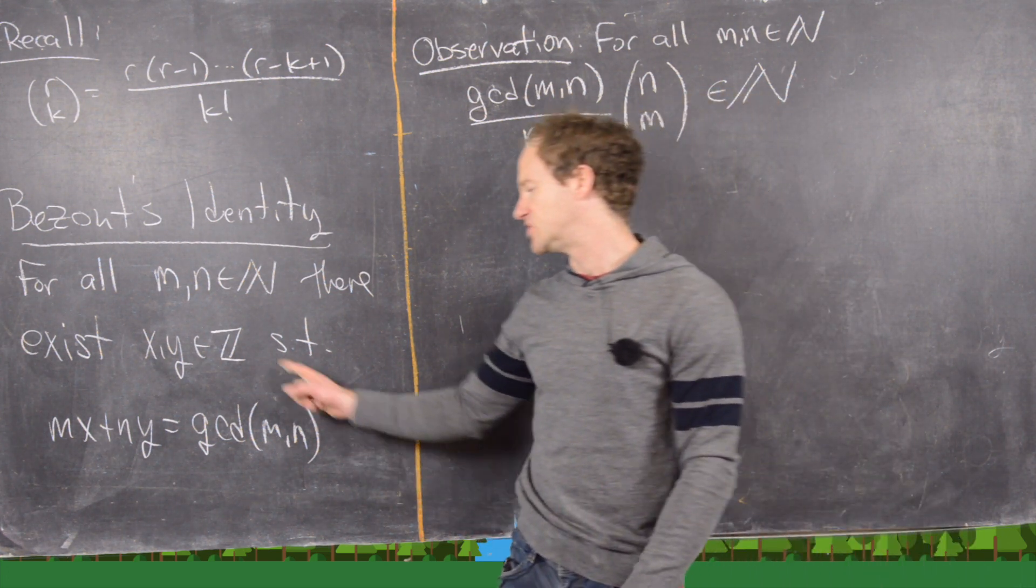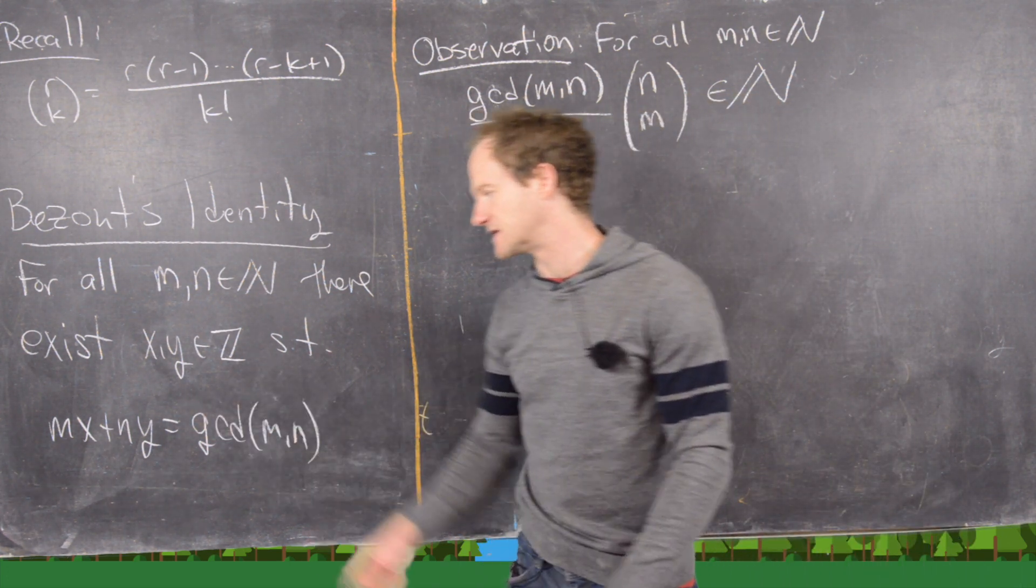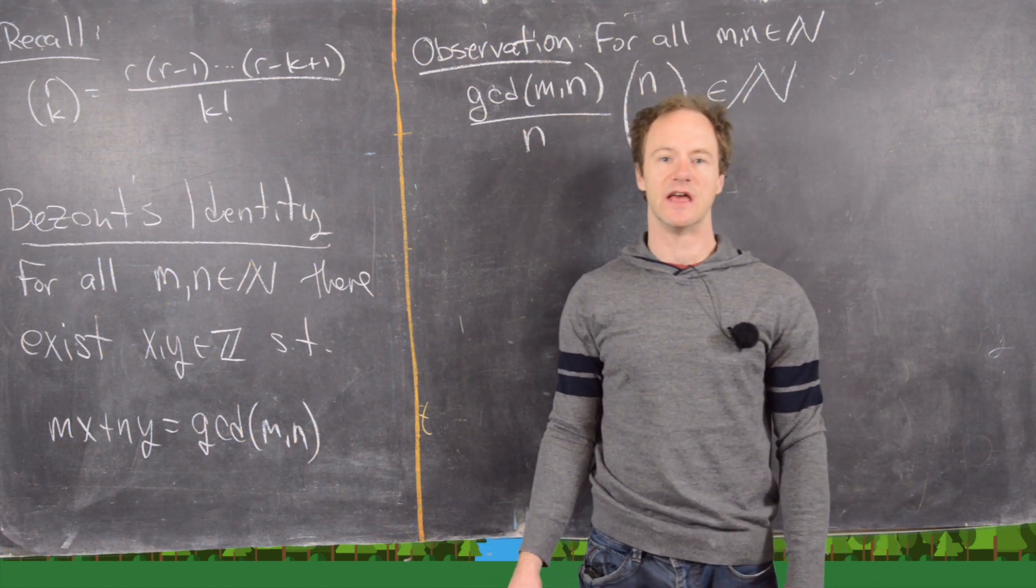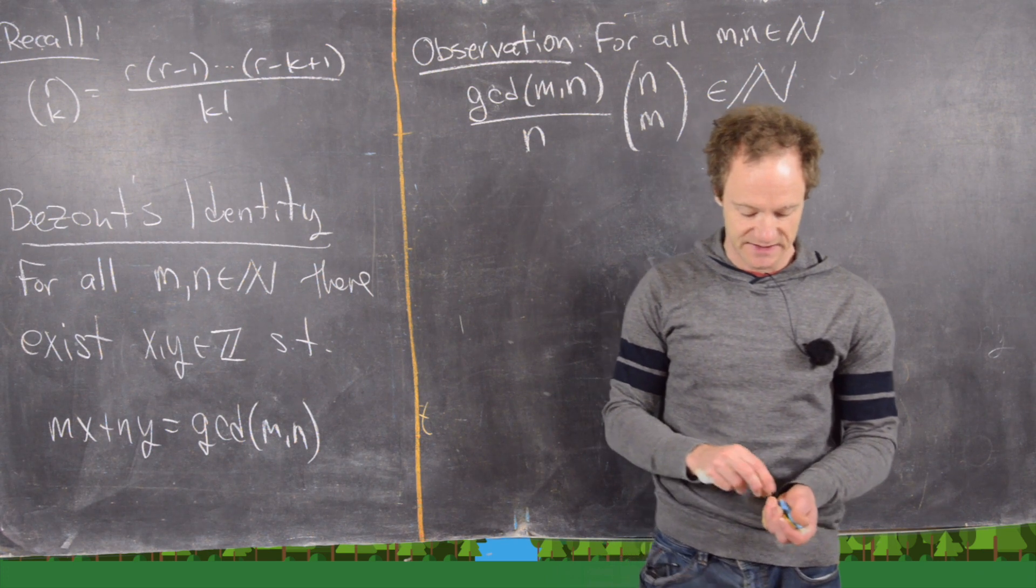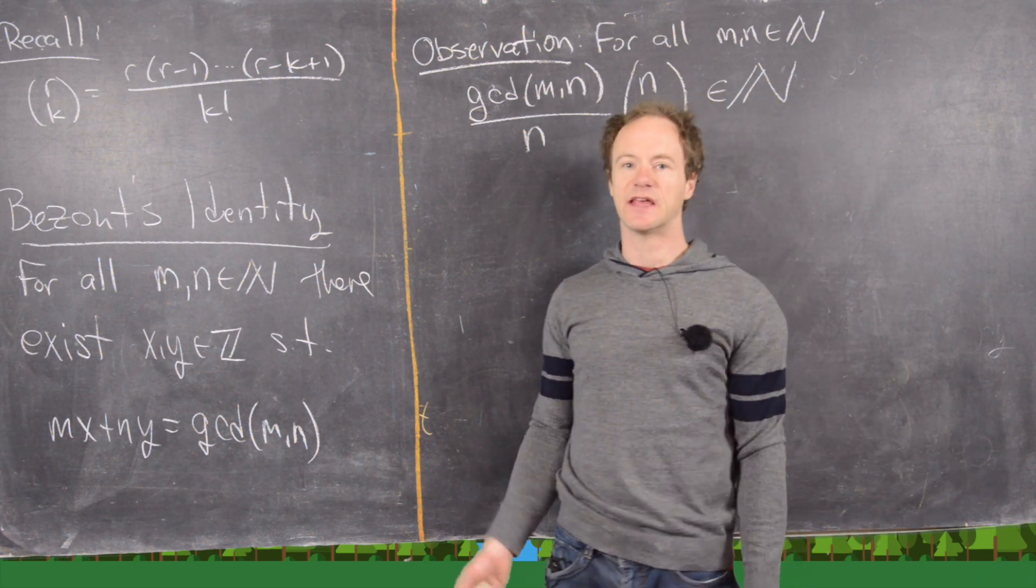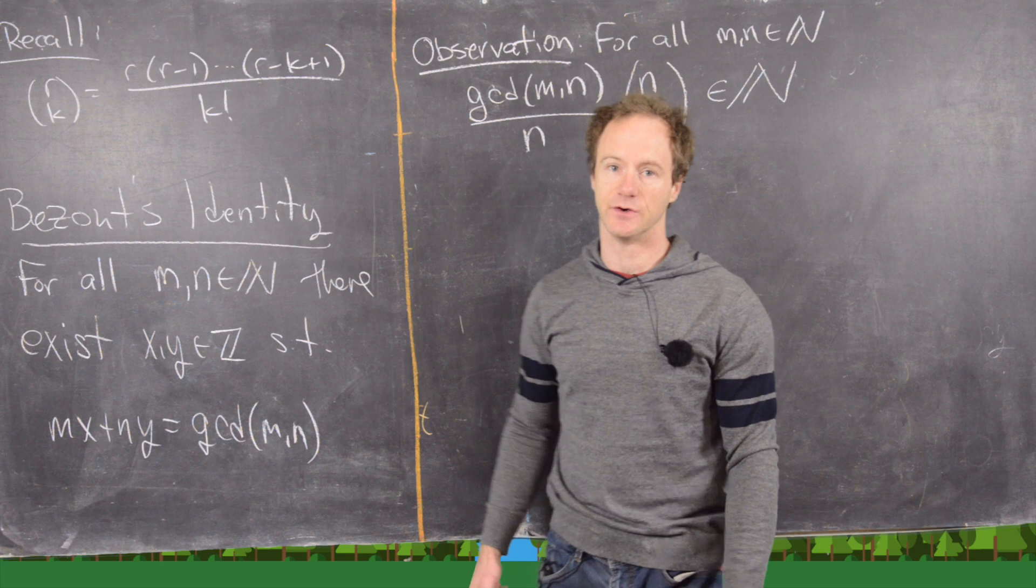In other words, the GCD of m and n can be written as a linear combination of m and n. And the way that you do this in practice is via something called the Extended Euclidean Algorithm. So again, I've got a bunch of videos on that kind of stuff too.